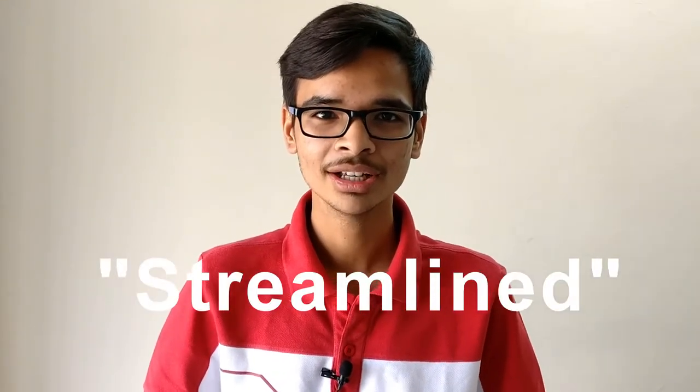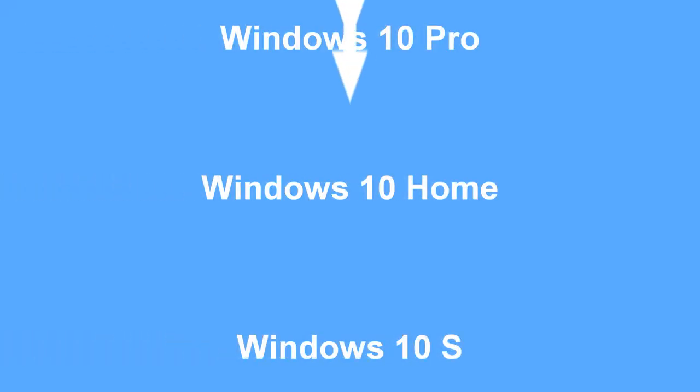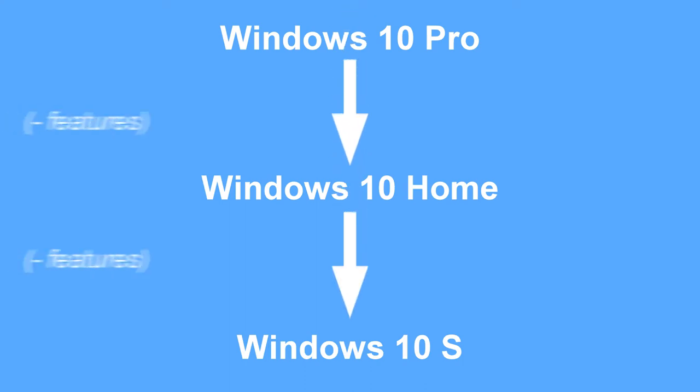Microsoft launched a third version of Windows 10 called Windows 10 S — S stands for Streamlined. You might think that two versions were enough, and that Windows 10 S would simply be Windows 10 Pro or Windows 10 Home minus some features.